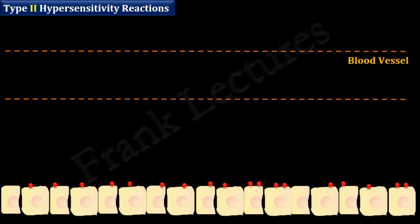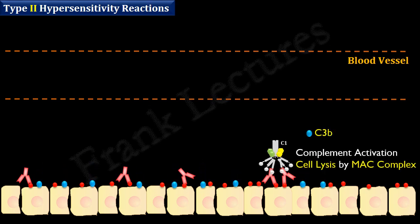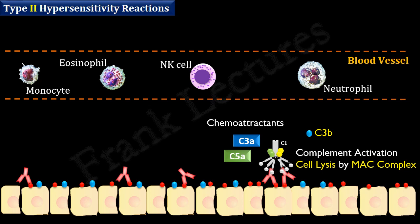Complement-mediated reactions can also occur when antigens are present on cells that are part of a solid tissue — in other words, fixed cells. If the individual has preformed antibodies recognizing antigens on these cell surfaces, the classical complement pathway is activated and cellular destruction takes place via the membrane attack complex. Additionally, complement proteins C3a and C5a are released; besides causing inflammation, these act as chemoattractants, causing leukocytes such as neutrophils, eosinophils, and natural killer cells to migrate from circulation to the site.